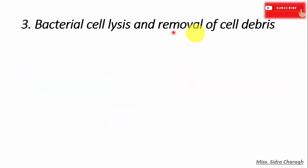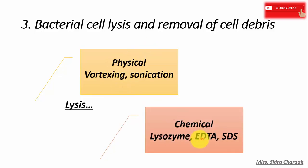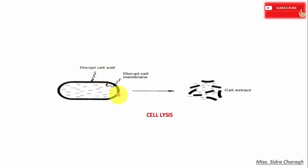The next step is bacterial cell lysis and removal of cell debris. In cell lysis, the nucleus and cells are broken up, thus releasing the DNA. This process involves mechanical disruption like vortexing and sonication, or chemical methods using enzymes and detergents such as lysozyme, EDTA, and SDS. We also use proteinase K to dissolve cellular proteins and free the DNA.